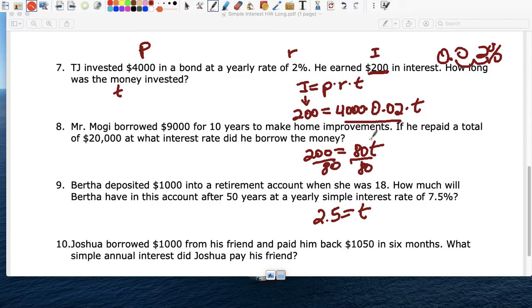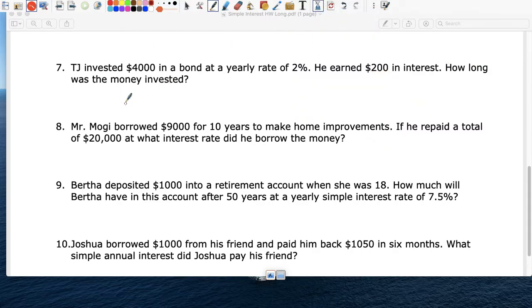Two years and a half. He left the money in the bank. Number eight. Mr. Mogui borrowed $9,000. So that's your principal. For 10 years. That's your time. He paid a total, when he returned the money, he paid a total of $20,000.